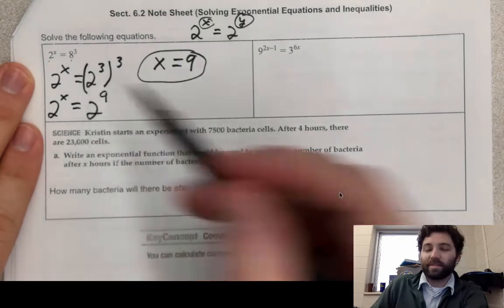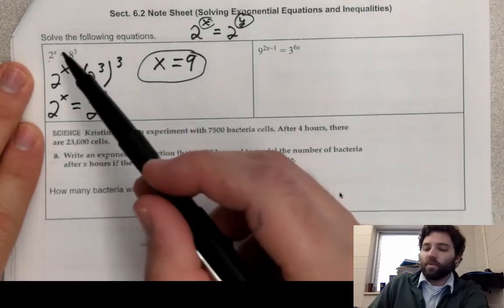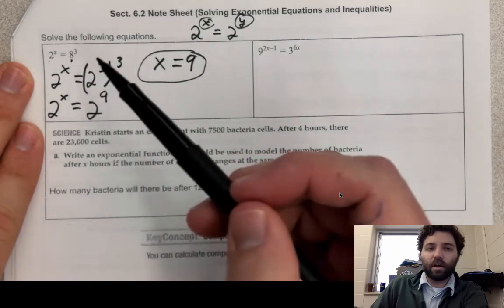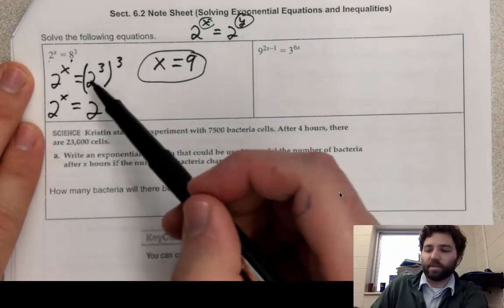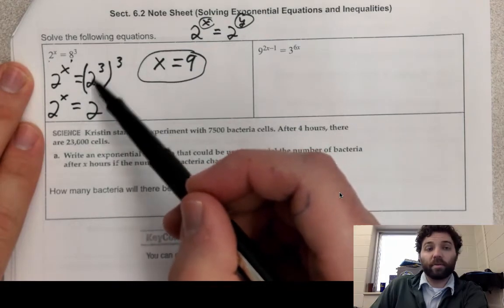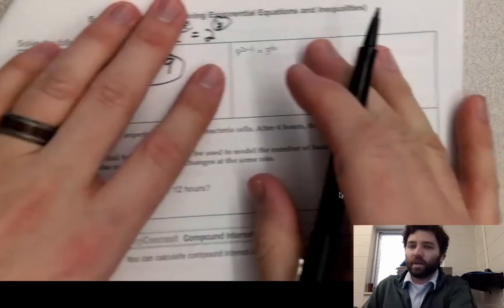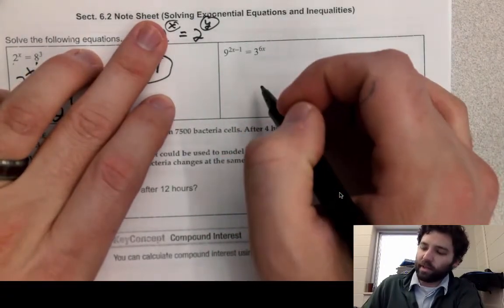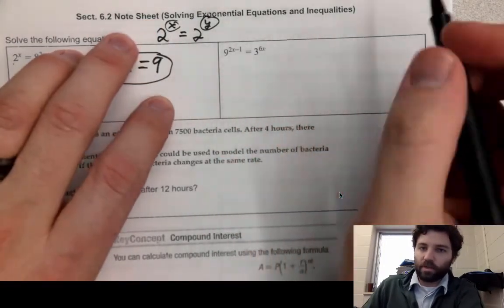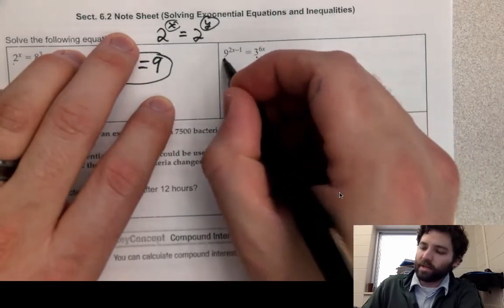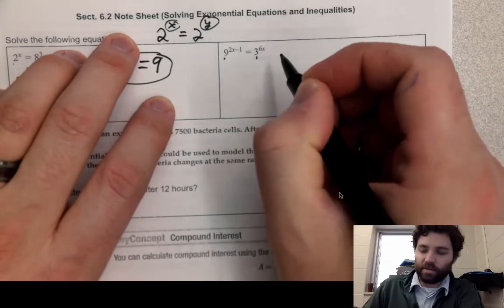Sometimes you won't recognize immediately what base things need to be turned to — you might have to play around with it, especially if it's a fraction, figuring out what exponent the base needs to be raised to. Let's do one that's a little more complicated — you should pause and try it, then play the video. For this one I'm going to look for a base 3 on both sides; the left side is already base 3, so that's fine.